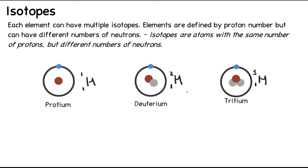The next important thing about isotopes is that the number of neutrons in an atom in no way affects its chemical properties. So all three isotopes of hydrogen have the same chemical properties, even though they have different numbers of neutrons. What does change is their physical properties, but just remember: the number of neutrons doesn't affect chemical properties.